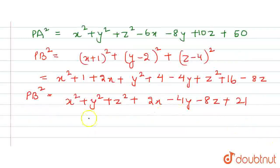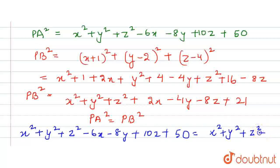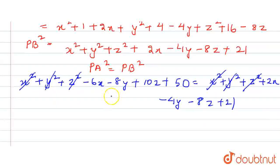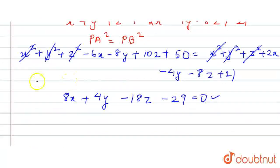Now putting the values into PA squared equals PB squared: X squared plus Y squared plus Z squared minus 6X minus 8Y plus 10Z plus 50 equals X squared plus Y squared plus Z squared plus 2X minus 4Y minus 8Z plus 21. Cancelling the common terms from both sides, and taking all remaining terms to one side, we get 8X plus 4Y minus 18Z minus 29 equals 0. This is the required equation. Thank you.